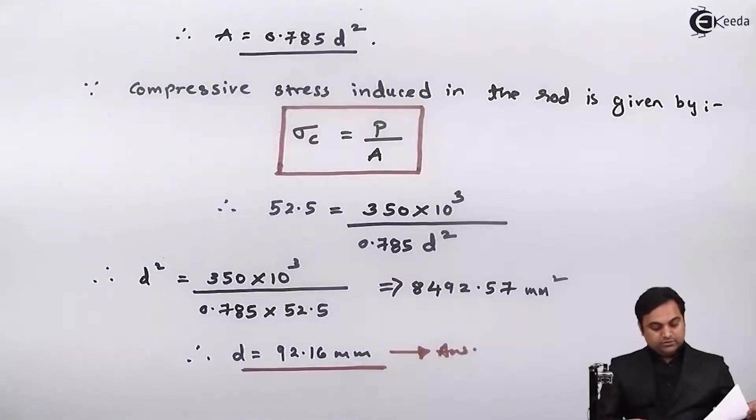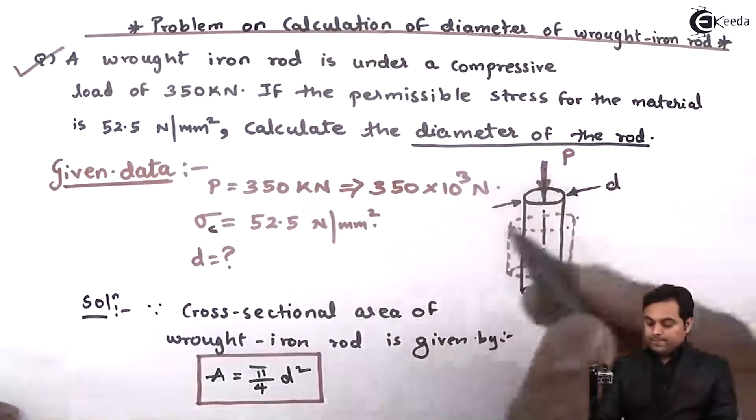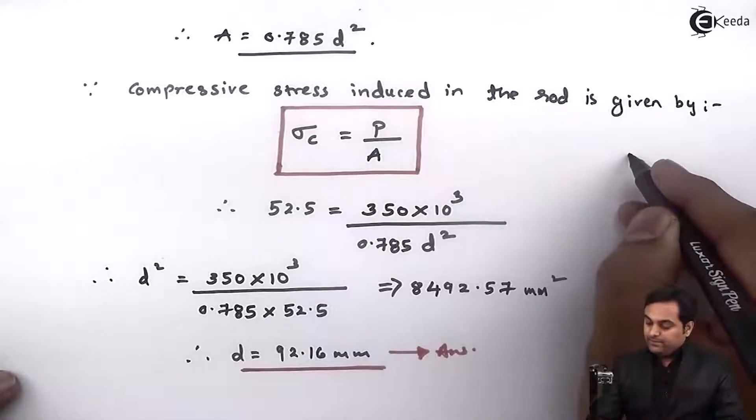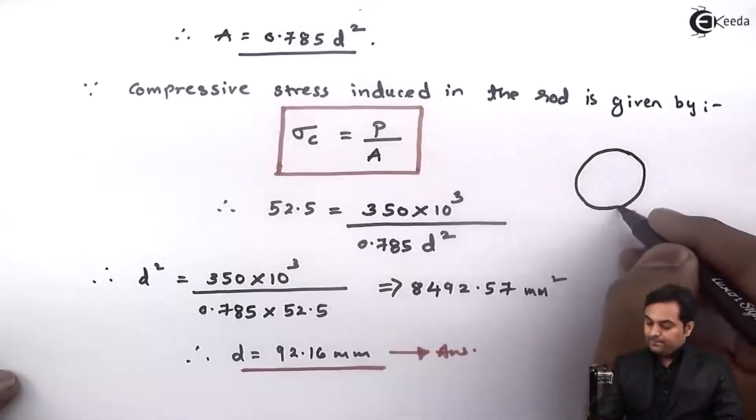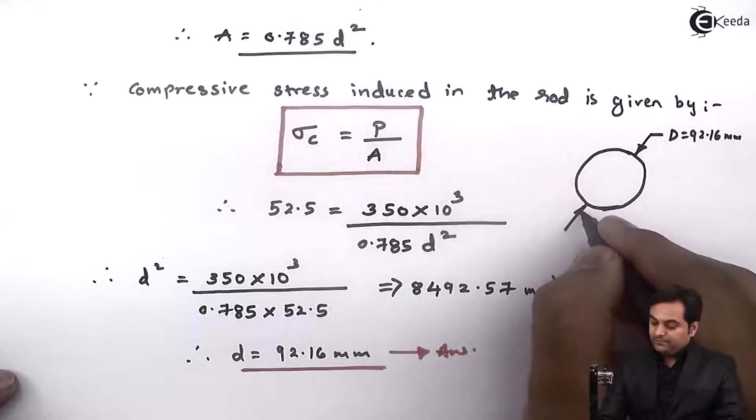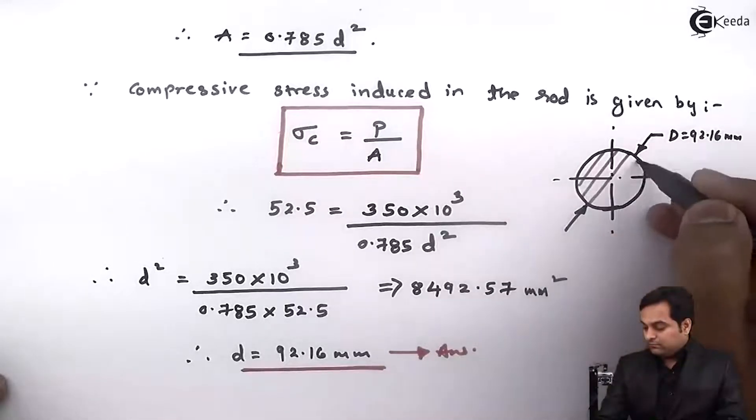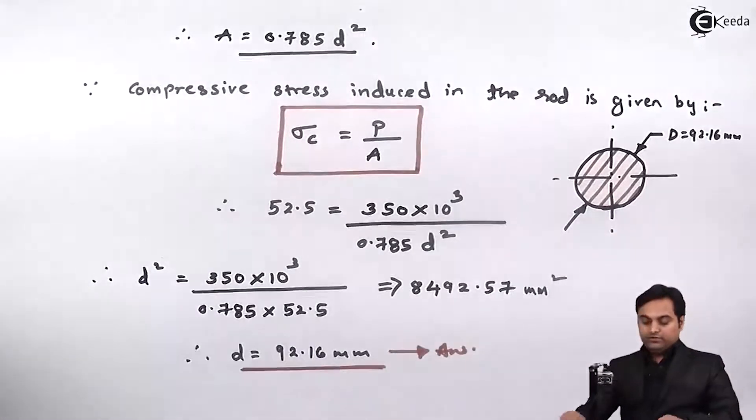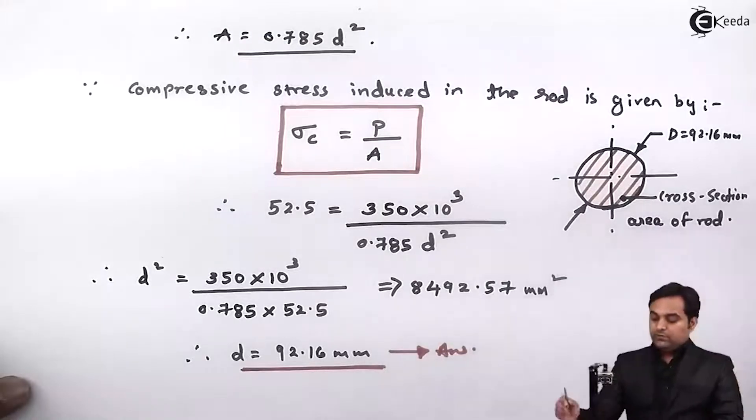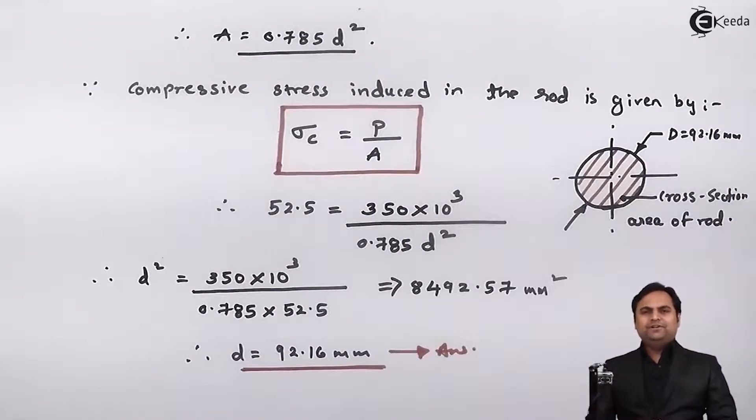This is the answer. The diameter of the rod is 92.16 mm. Once we have calculated the diameter and indicated the cross-section area of the rod, we have completed this problem.